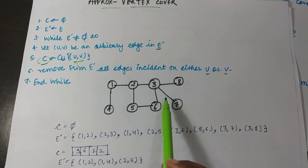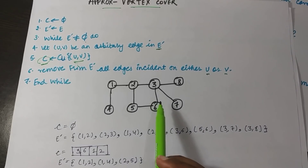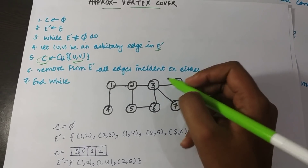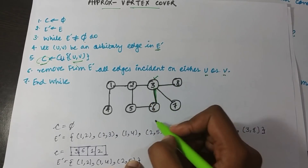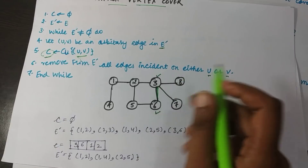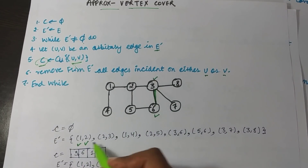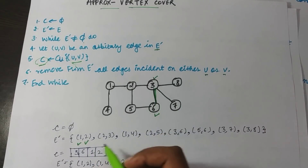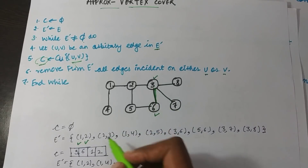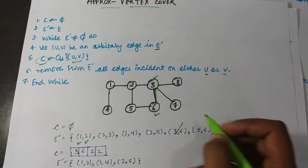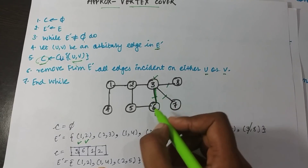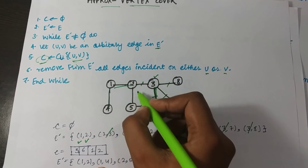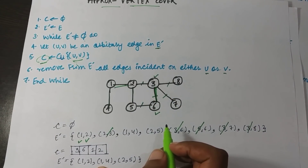Using the same graph as before, I apply the approximate vertex cover. I arbitrarily choose edge (3, 6). Vertices 3 and 6 are added to the solution set. Then all edges associated with vertices 3 and 6 are removed: edges (3,6), (3,7), (3,8), (2,3), and (5,6) are all removed. I'm left with a smaller remaining graph.